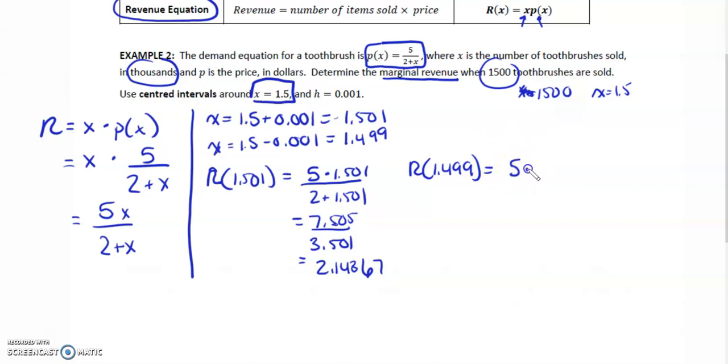Then we're going to do the same thing: 5 times 1.499 over 2 plus 1.499. I get 7.495 over 3.499, and we get 2.14204.